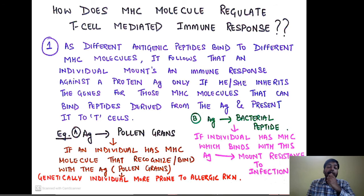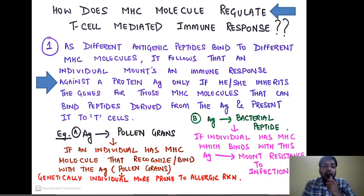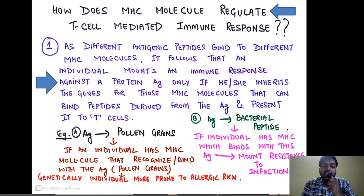How does the MHC molecule regulate the T cell mediated immune response? Different antigenic peptides bind to different MHC molecules. An individual will mount an immune response against a protein antigen only if they have the gene for that particular MHC molecule that can bind the peptides derived from the antigen and present it to the T cells. The concept is: I can only present a particular antigen to a T cell if I have the MHC molecule specific for that antigen, because the MHC must recognize the peptide to display it.